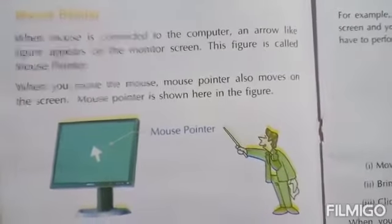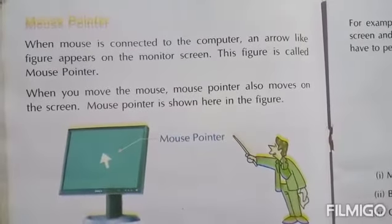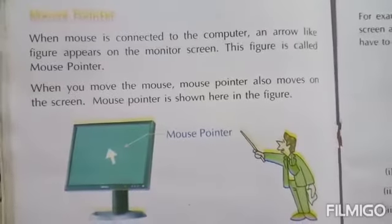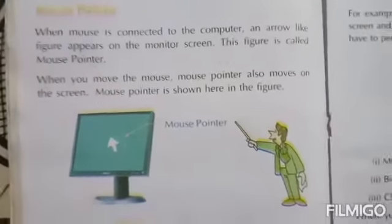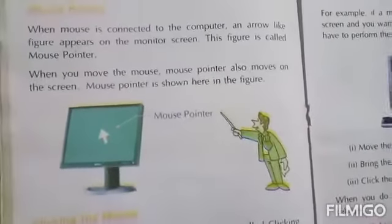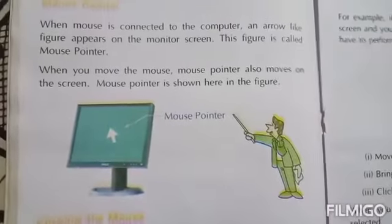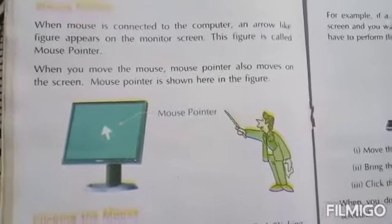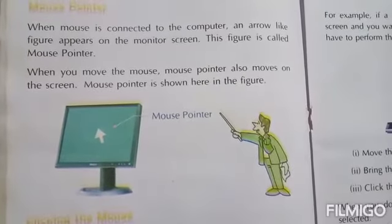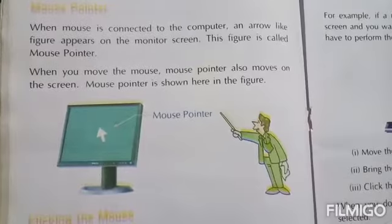When a mouse is connected to the computer, an arrow-like figure appears on the monitor screen. This figure is called a mouse pointer. When you move the mouse, the mouse pointer also moves on the screen.